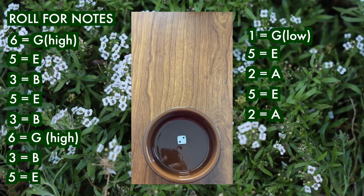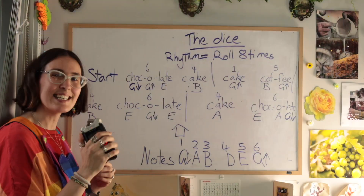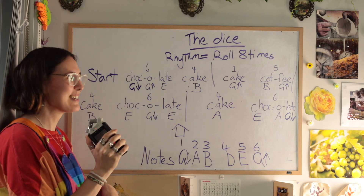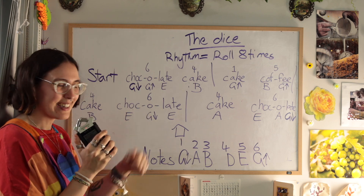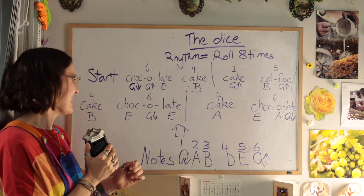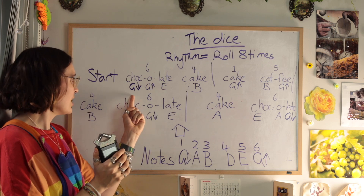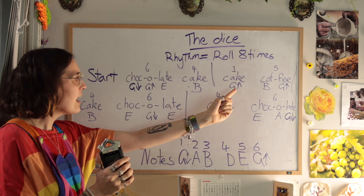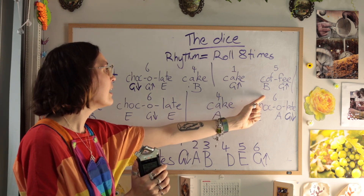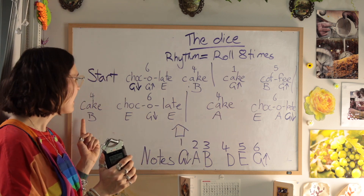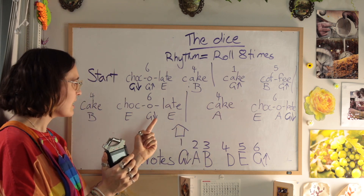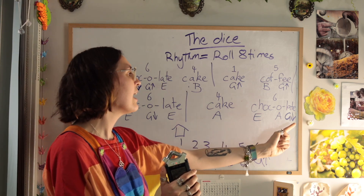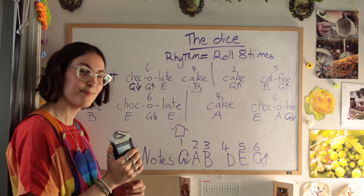Our piece of music needs one more thing: enough notes to go with the amount of syllables in our cake, coffee and chocolate. The first and last notes are really easy — we just go ahead and fill in our home note, which is a low G. I've designated low by putting a little down arrow next to it: first note, last note. Now we need to roll for the rest of our syllables. The dice delivered me enough notes to go with the rhythms I rolled, and I've written them in under our food words.